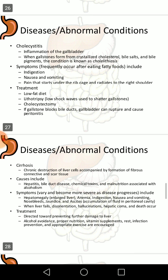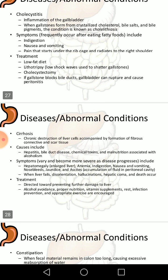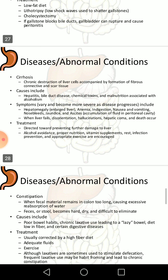Cholecystitis is inflammation of the gallbladder. When caused by crystallized cholesterol or certain bile pigments, the condition is known as cholelithiasis. Symptoms include indigestion, nausea, vomiting, and pain that starts under the rib cage and radiates to the right shoulder. Treatment includes a low-fat diet and cholecystectomy — surgical removal of the gallbladder. If a gallstone blocks the bile duct, the gallbladder can rupture and cause peritonitis.